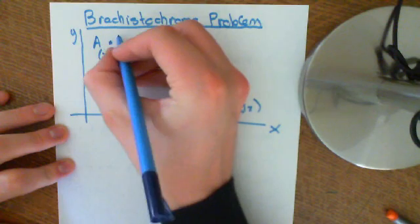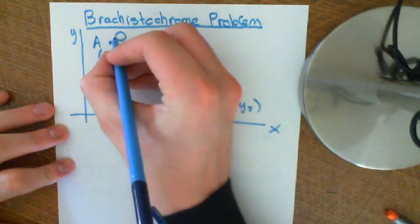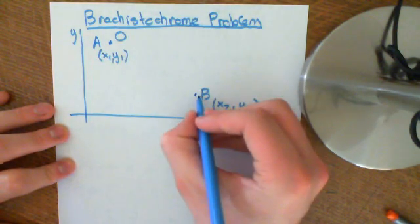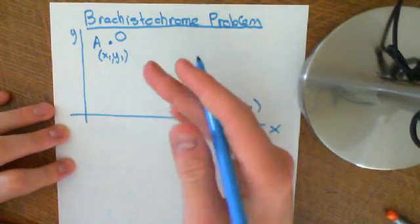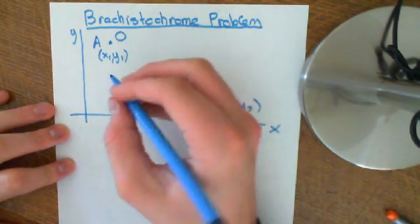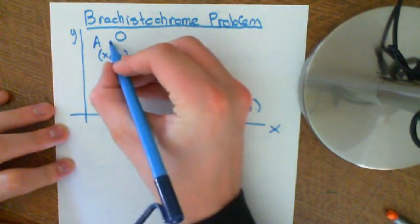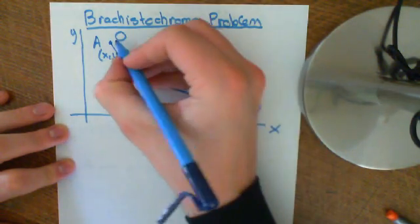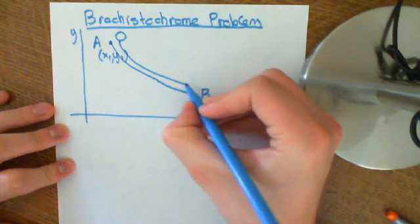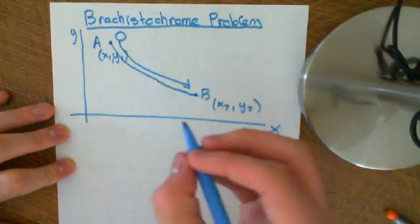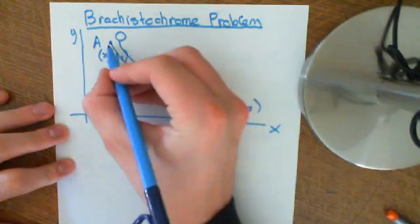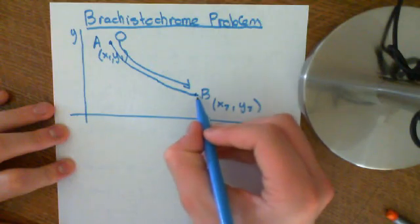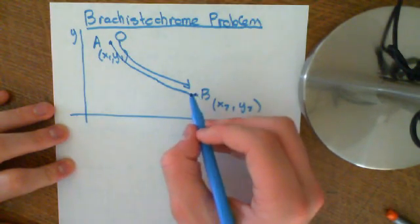So this is the problem. I have a ball, and I want the ball to go from place A to place B. I want to put effectively a slide, imagine a children's slide. I want to put a children's slide between A and B that the ball can roll down. So the ball is going to roll down here.